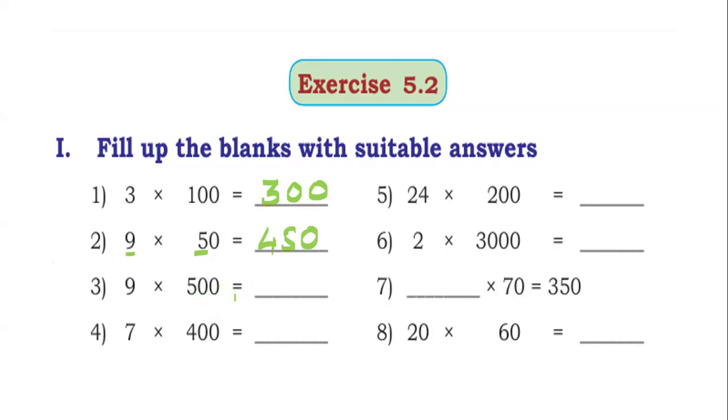9 into 500. 9 into 5 is 45. Right hand side 2 zeros are there. Put zeros here. 9 into 500 is 4,500.